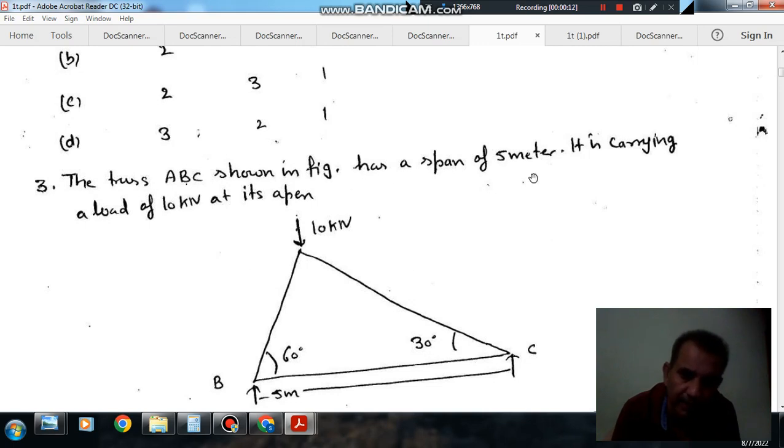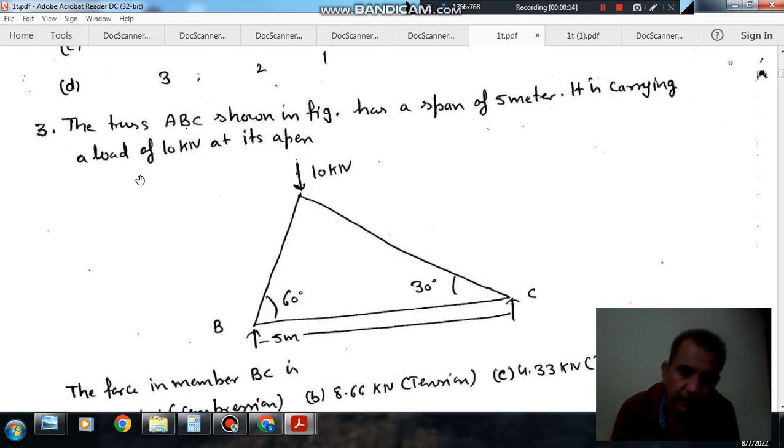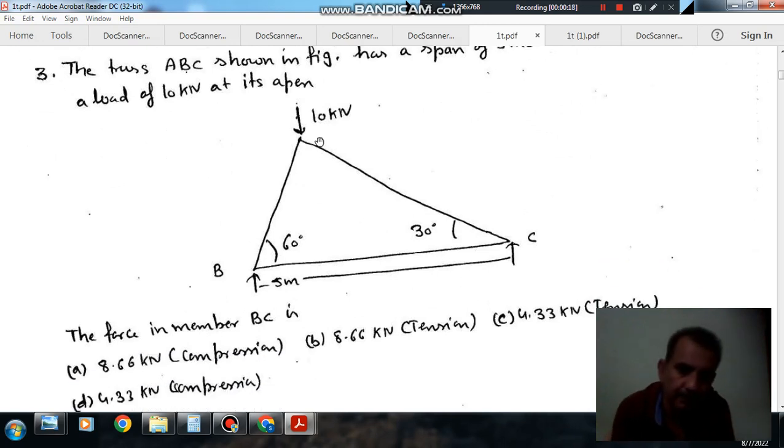Truss ABC shown in figure has a span of 5 meters. It is carrying a load of 10 kN at its apex.